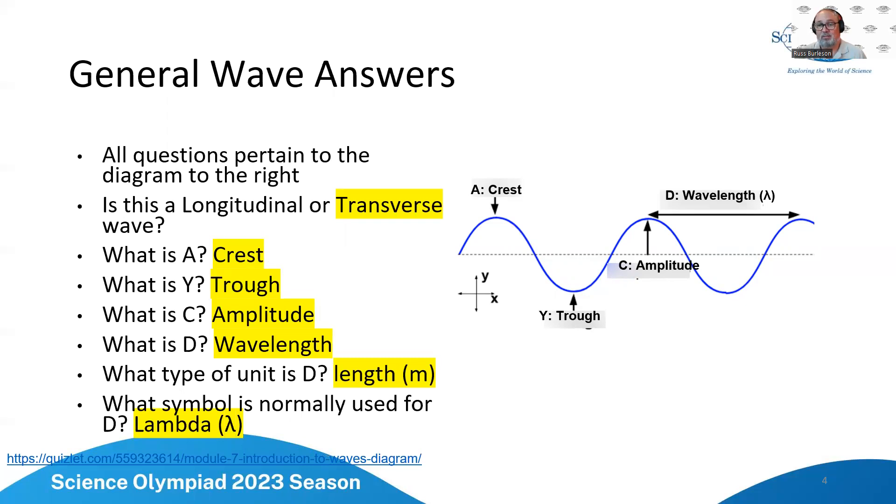It is a transverse wave because the movement from equilibrium is orthogonal to the wave propagation. A is the crest, Y is the trough, C is the amplitude, and D is the wavelength.